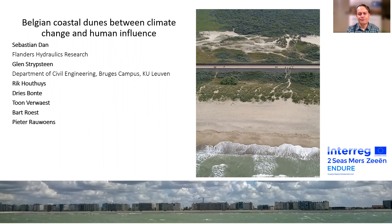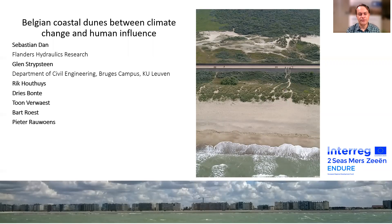If we talk about the Belgian dunes, they are highly influenced by human activities. Here is an example of how infrastructure of transportation cuts the dune system into two parts along shore. So obviously the far part of the picture is detached in dynamic terms from the near shore system. In other parts such as Ostend Beach, the dunes have been replaced with buildings or other infrastructure.